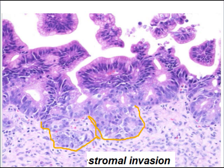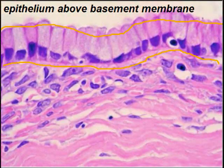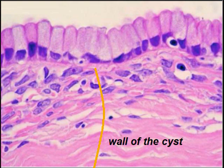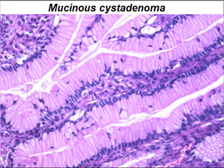Here you can see the stroma is invaded by malignant tumor. For comparison, this is benign mucinous epithelium with the fibrous wall of the cyst. You can appreciate the mucin-filled apical structures and nicely placed uniform nuclei at the basal level of the cells.